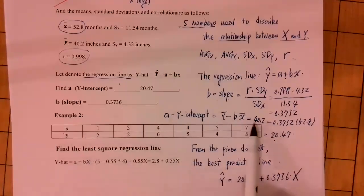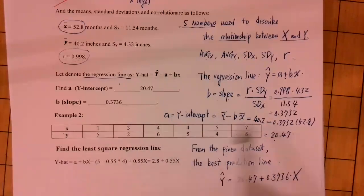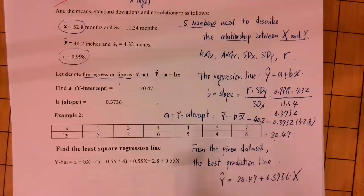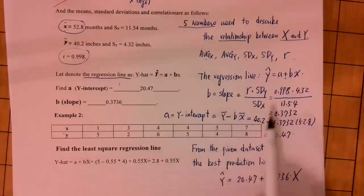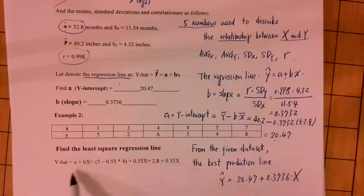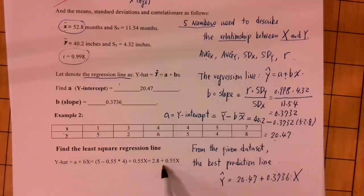I leave an extra exercise here. Using a given data set, find the best prediction line — the least square regression line — using the formulas just covered. The answer is ŷ = 2.8 + 0.55x. Try it as an exercise.